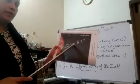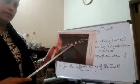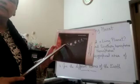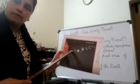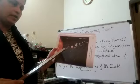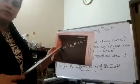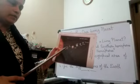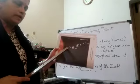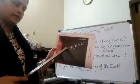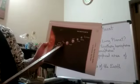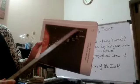The largest one is Jupiter, then Saturn, Uranus, Neptune, and Earth is the fifth largest planet in the solar system. The smallest one is Mercury. The smallest one is Mercury and the biggest one is Jupiter, and Earth is the third planet and fifth largest planet in the solar system.